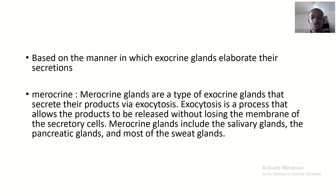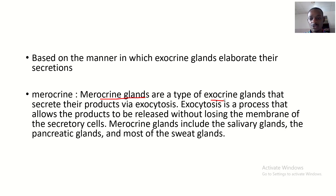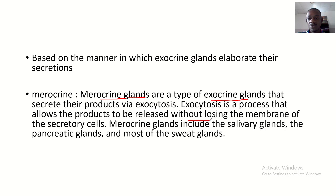Based on the manner in which exocrine glands secrete and elaborate their secretions, we have the merocrine glands. Merocrine glands are a type of exocrine gland that secrete their products via exocytosis — a process that allows the product to be released without losing the membrane of the secretory cells. Merocrine glands include the salivary glands, pancreatic glands, and most sweat glands.